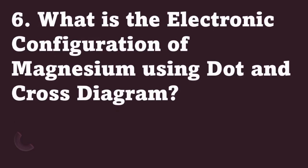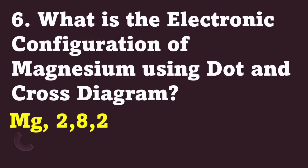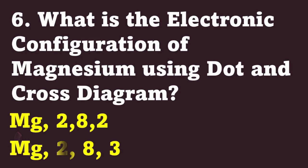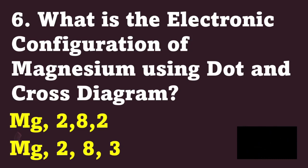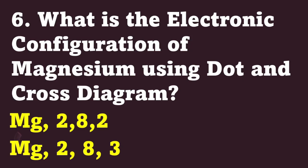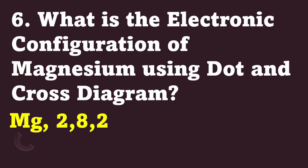For number six. What is the electronic configuration of magnesium using a dot and cross diagram? Is it Mg, 2, 8, 2? Or is it Mg, 2, 8, 3? The correct answer is: Mg, 2, 8, 2.